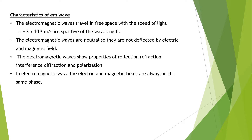In an EM wave, the electric and magnetic fields are always in the same phase. Electric waves and magnetic waves will be in phase with each other. Whether at maximum amplitude, minimum amplitude, or anywhere in between, they will always be in the same phase.